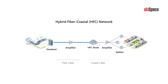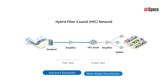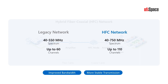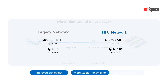One significant difference of the HFC network compared to traditional cable networks is the use of fiber cable between the head end and the HFC node, as opposed to coaxial cable. Upgrading to analog fiber improves bandwidth significantly to multiple gigabits per second, provides more stable and reliable transmission, and expands spectrum coverage to up to 110 analog channels compared to the 60-channel capacity of traditional cable. HFC also requires less maintenance.